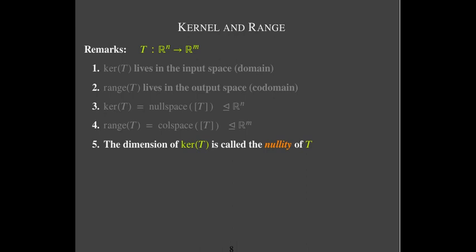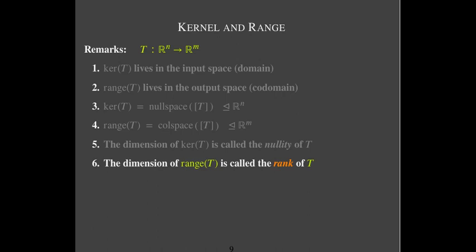The range is the same as the column space of the standard matrix of the linear transformation. The kernel of T is called the null space of its standard matrix, so the dimension of the kernel is called the nullity. The dimension of the range is called the rank of T, just like the dimension of the column space. And just like rank plus nullity for matrices equals the number of columns, here the rank plus the nullity of a linear transformation equals the dimension of the domain.